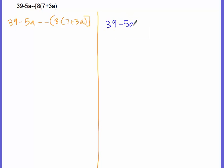minus 5a minus, we use parentheses instead, 8 times 7 plus 3a. Okay, all right. Before we do anything to this right here, we got to get rid of parentheses first.